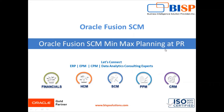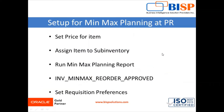Some basic setups for min max planning at purchase requisition: first we have to set price for our item. After defining the price, we have to assign the item at sub-inventory level. After that we have to run the min max planning report, where minimum quantity, maximum quantity, reorder quantity, and on-hand quantity available of our item are shown.